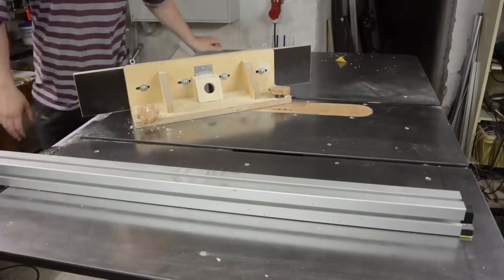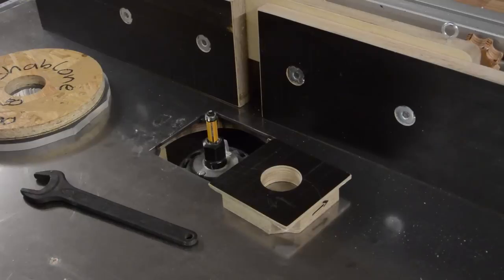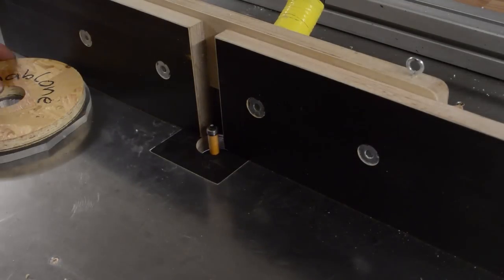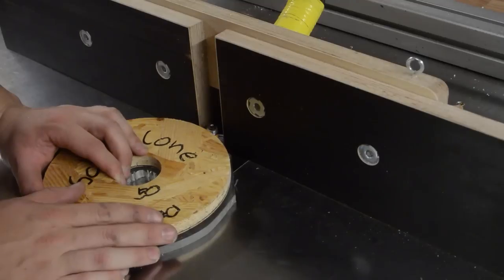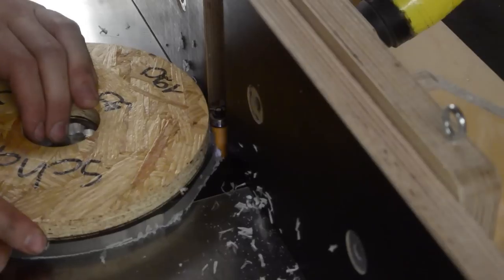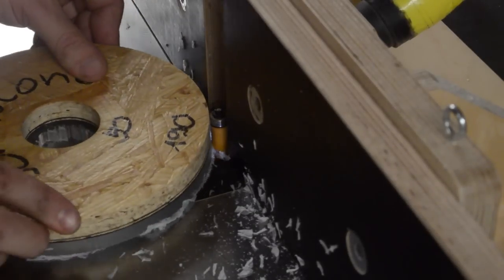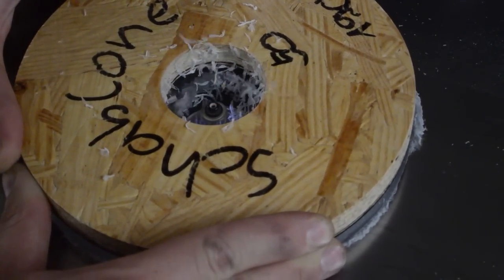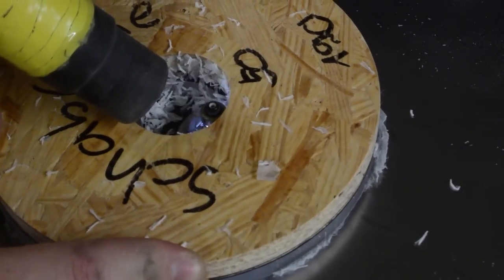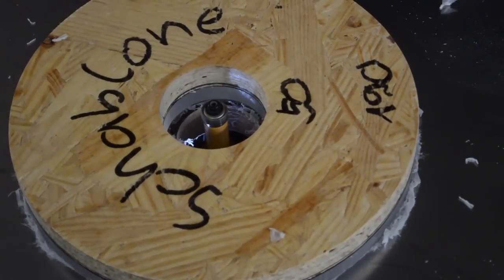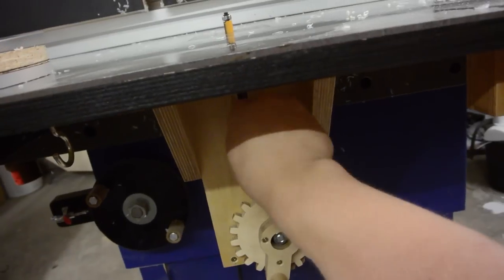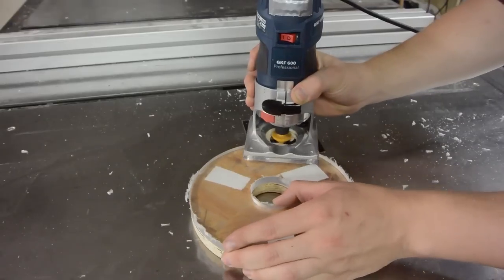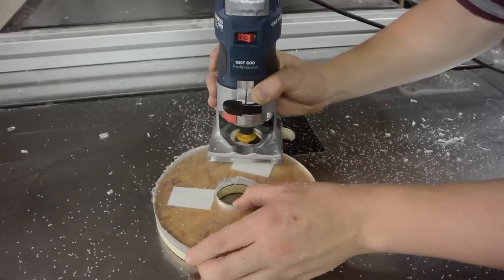Using the router side of the table saw, the acrylic can be trimmed flush. After that I chamfered the edges which will help with the glue up later.